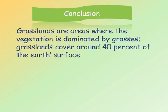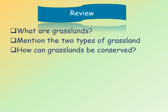In conclusion, grasslands are areas where the vegetation is dominated by grasses, and grasslands cover around 40 percent of the earth's surface area. Review questions for today: What are grasslands? Mention the two types of grasslands. How can grasslands be conserved? Thank you for watching, have a great day.